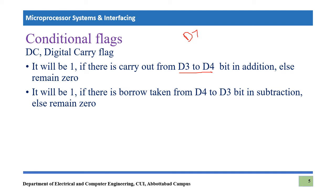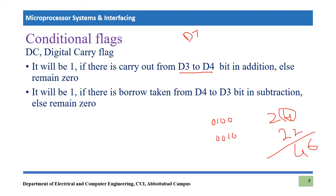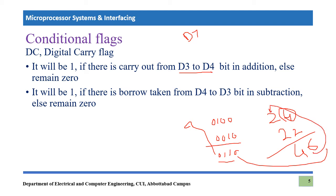For example, if we add 24h and 22h: 4 plus 2 equals 6, and 2 plus 2 equals 4. In binary, 4 is 0100 and 2 is 0010; adding them gives 0110, which is 6. There is no carry coming out from D3 to D4, so the digital carry flag DC remains equal to 0.